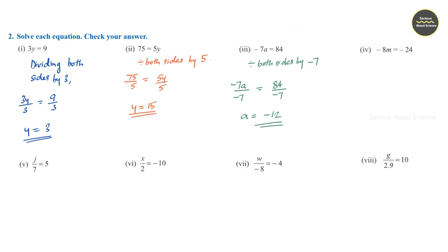Question number 4: minus 8m is equal to minus 24. Dividing both sides by minus 8, minus 8m by minus 8 is equal to minus 24 divided by minus 8, that is, m is equal to 3.